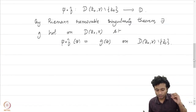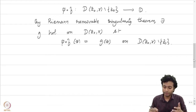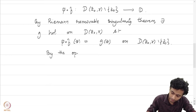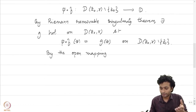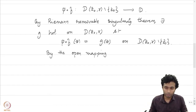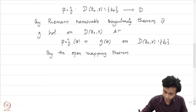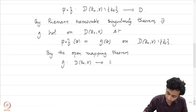Now, the key thing is that g is going to map D(z₀, r) into the set of all z such that |z| ≤ 1. By the open mapping theorem, we need to ensure that g(z₀) does not have unit modulus. By the open mapping theorem, g(z₀) is going to be in the unit disk, so g maps D(z₀, r) into the unit disk.